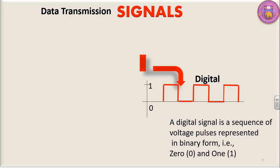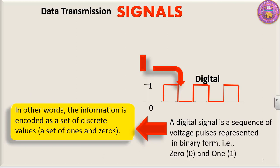In other words, the information is encoded as a set of discrete values — a set of 1s and 0s. So digital signals can be set to have two values: it can be either 1 or 0.